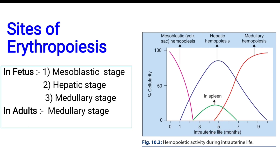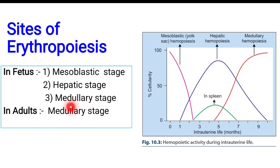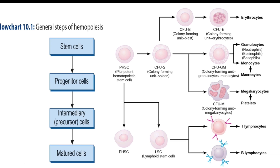Once the fetus reaches the fifth month of fetal life, marrow cavities are formed in the bone, and they soon become erythropoietic, starting to synthesize RBCs. Once started, they continue into post-fetal life as well. In adults also, the medullary stage is involved.